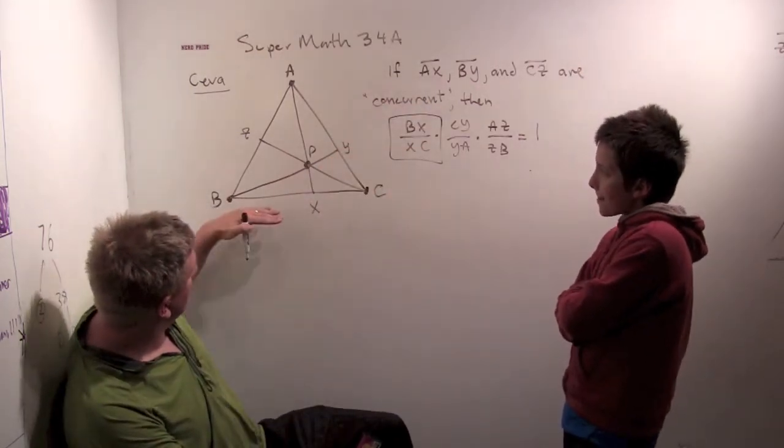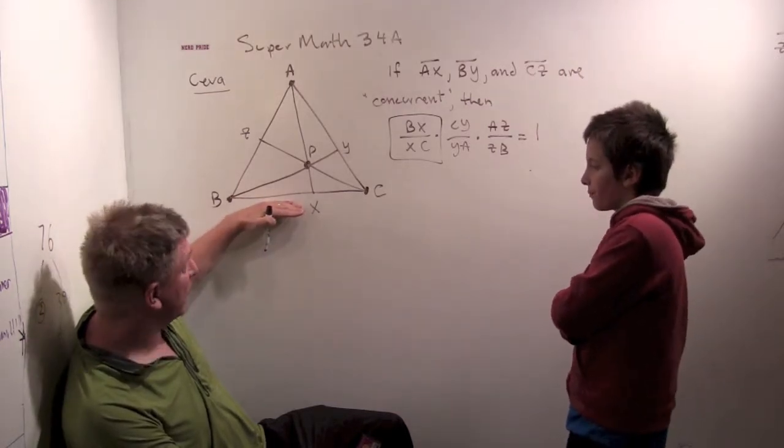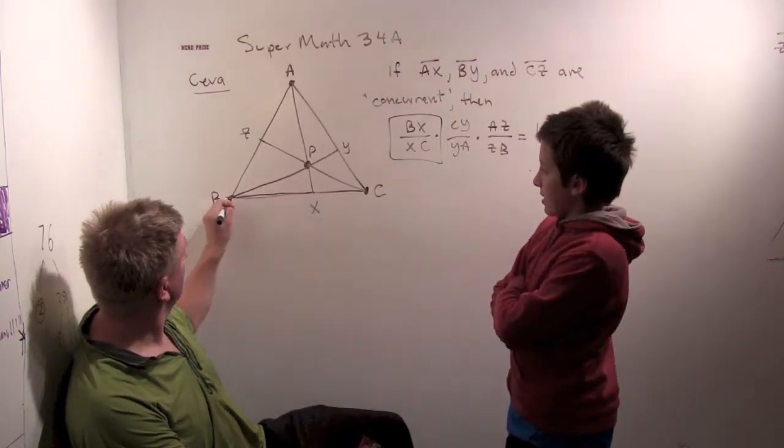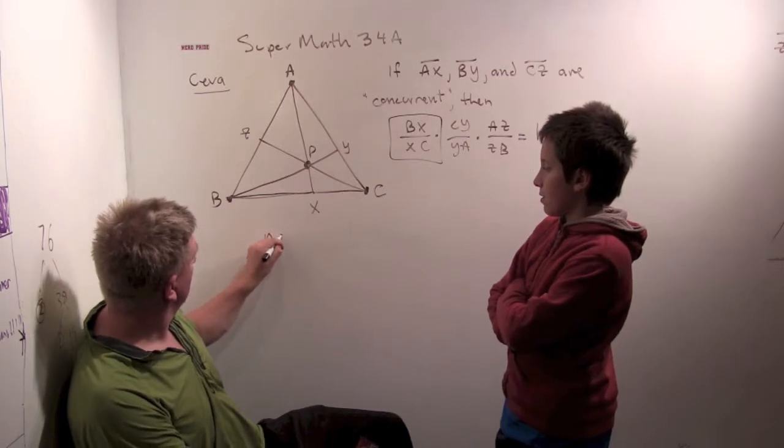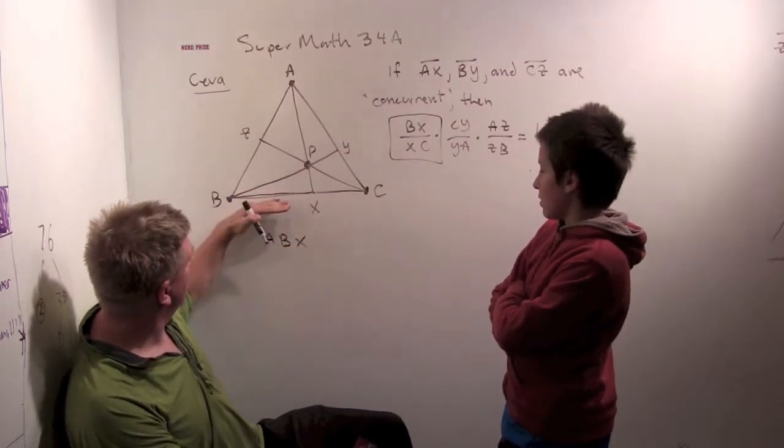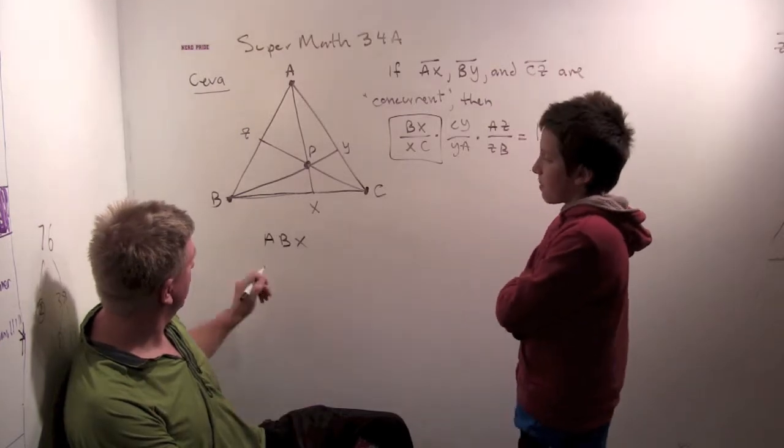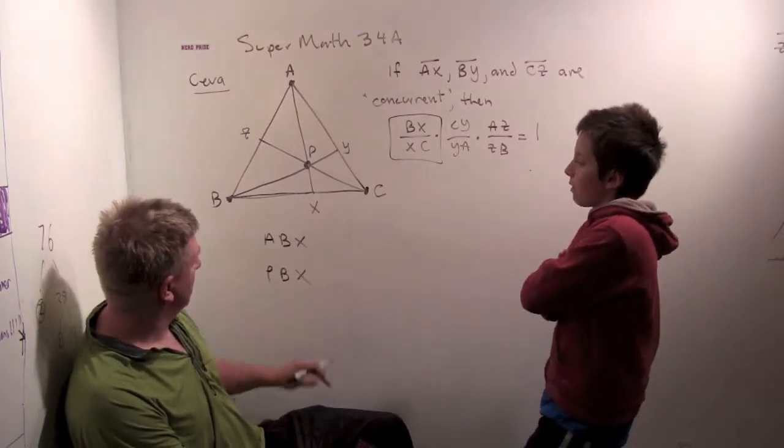Now you can see a couple triangles that have BX as the base. Can you tell me, can you show me two triangles that have BX as the base? Well, I'll try to go XAB. Okay, I'll call it ABX. There's one triangle that has BX as the base. And then there's PBX. And there's PBX as well. Okay.